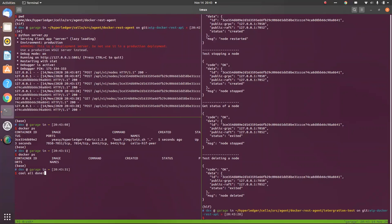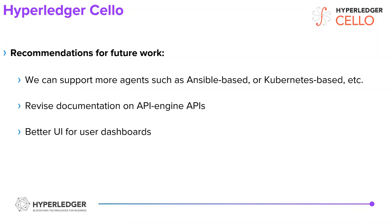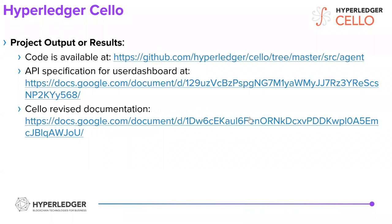For future work recommendations, we can support more agents such as Ansible-based or Kubernetes-based agents. We also need to revise the documentation for the APIs. Because Cello is a big project, what I have done is rather independent from the whole project, so the user dashboard needs to connect with the agents I have done in this mentorship program. The code is available on the Cello source agents, and the specification will be put to the wiki page later.